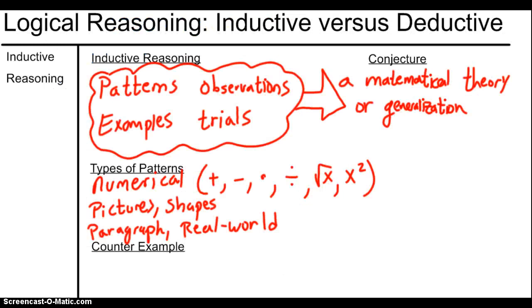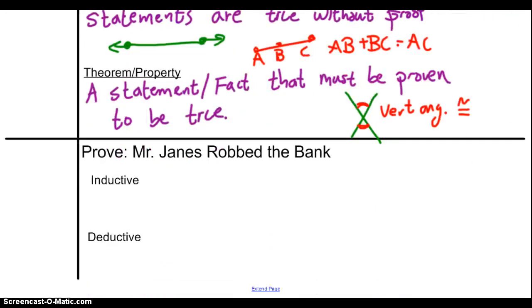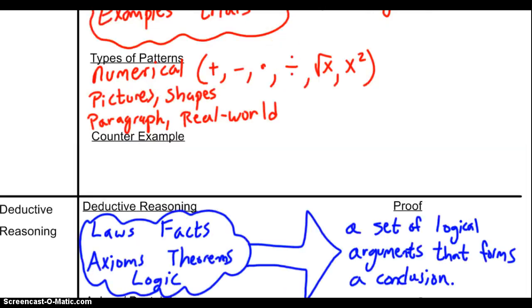Here's your job: go back to the bottom of your notes. I want you to prove that Mr. Jaynes robs a bank. Come up with some inductive reasons — patterns and observations showing how you know Mr. Jaynes robbed the bank. Next, come up with some deductive logical facts to support that. We'll share those next class. Hope you've enjoyed the video. Rewind if you need to. The counterexample section is blank — we'll talk about that next time. See you then!